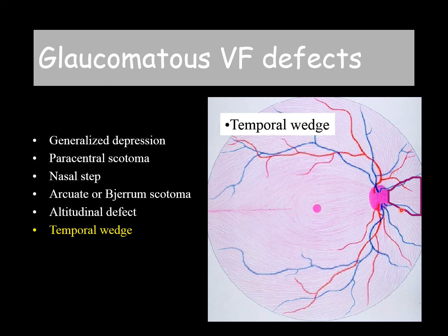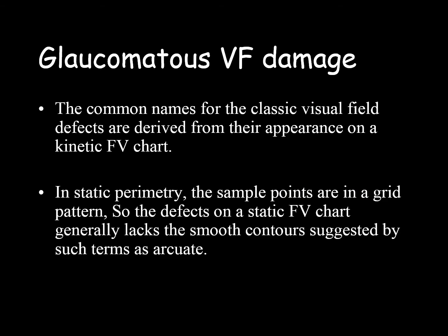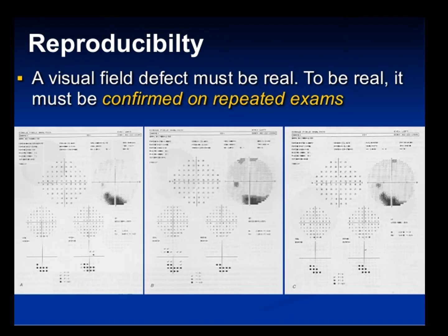Lastly, temporal wedge can be a sign of glaucomatous field changes. Keep in mind that the names of classic visual field defects are derived from the appearance in kinetic perimetry. In static perimetry the same points are in a grid pattern, so defects on the static visual field chart generally lack the smooth contours suggested by kinetic field names.